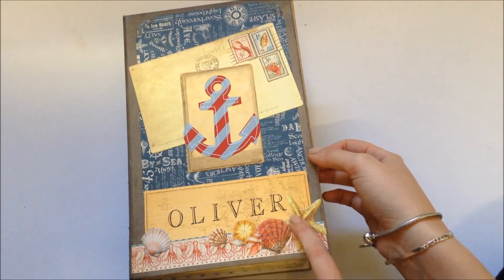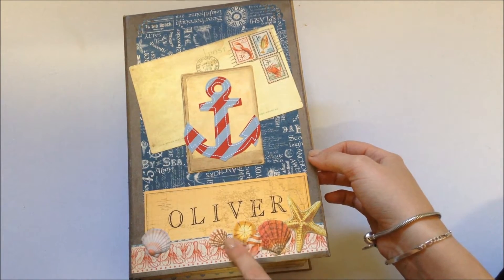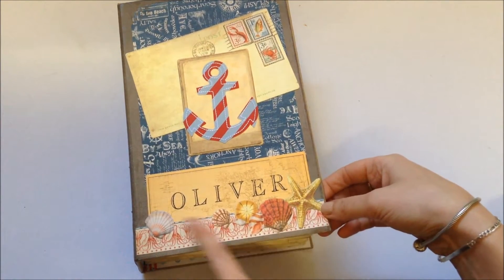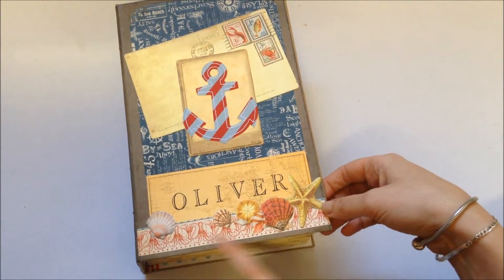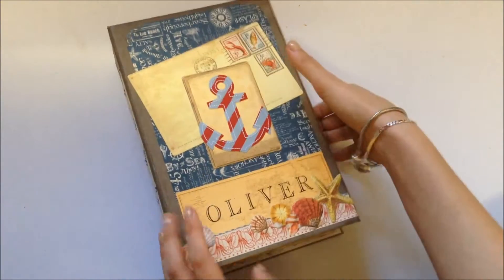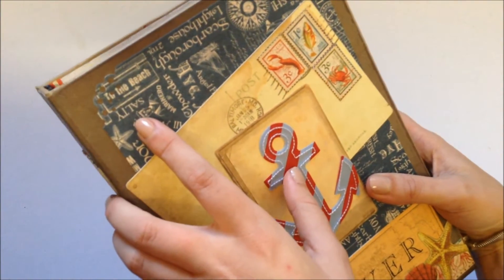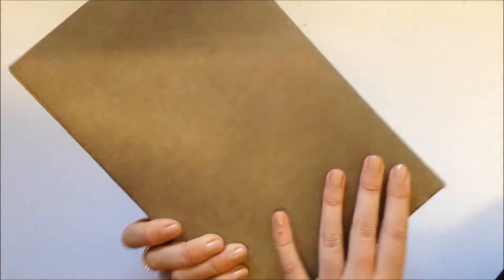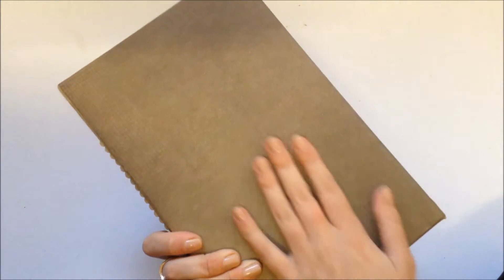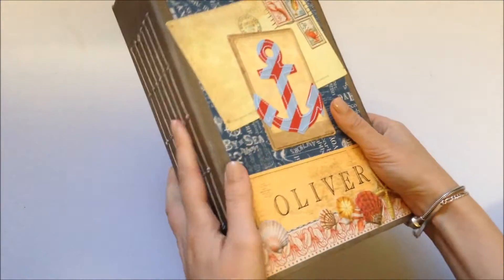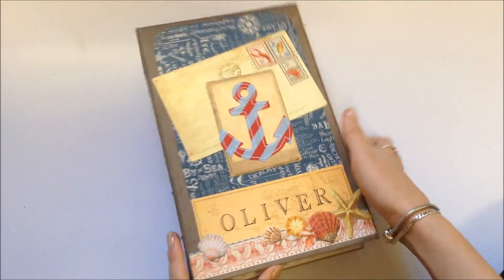Then I kind of fussy-cut these shells out of the paper and overlapped them there. There's a border strip and did some punching, which you probably can't see, up the top there. And this paper, this brown paper that I used to cover it was again K-Zcraft from the Vintage Timeless paper pattern.